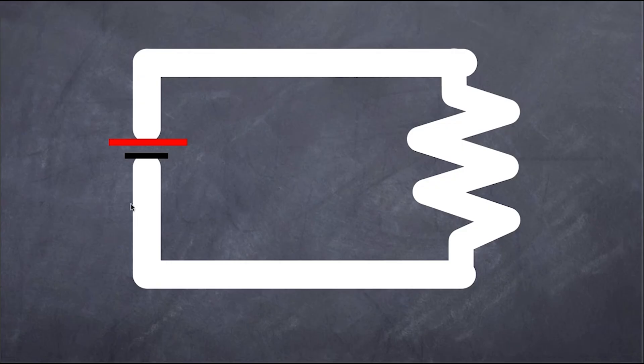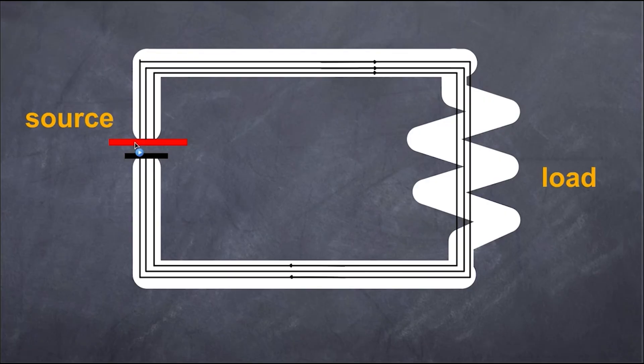Here's our simple circuit again. You see my source and my load. I'm going to set up an electric field with this plate, which means I'll have a flow of charge because charge will flow or experience a force in an electric field.